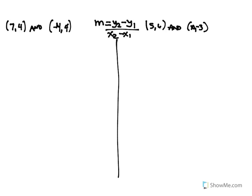Okay, given two ordered pairs, you want to be able to identify the slope. So given two points, you can get the slope for any line. This is your slope formula: m equals y2 minus y1 over x2 minus x1.